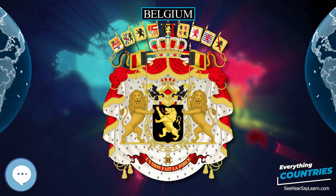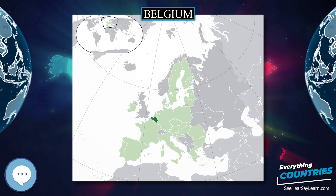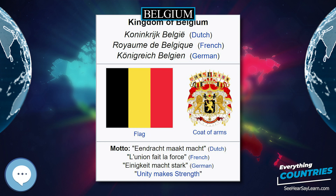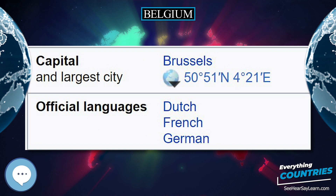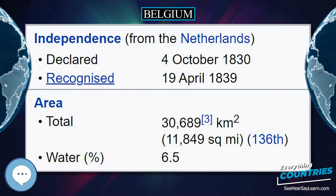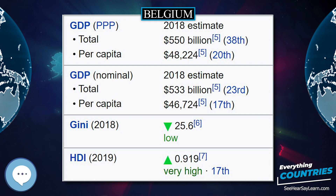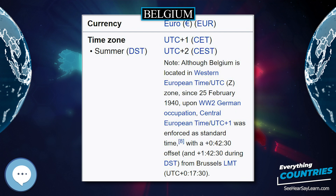Belgium's political institutions are complex; most political power is organized around the need to represent the main cultural communities. Since about 1970, the significant national Belgian political parties have split into distinct components representing the political and linguistic interests of these communities. The major parties in each community belong to three main groups: Christian Democrats, Liberals, and Social Democrats. A string of Christian Democrat coalition governments from 1958 was broken in 1999 after the first dioxin crisis, a major food contamination scandal.